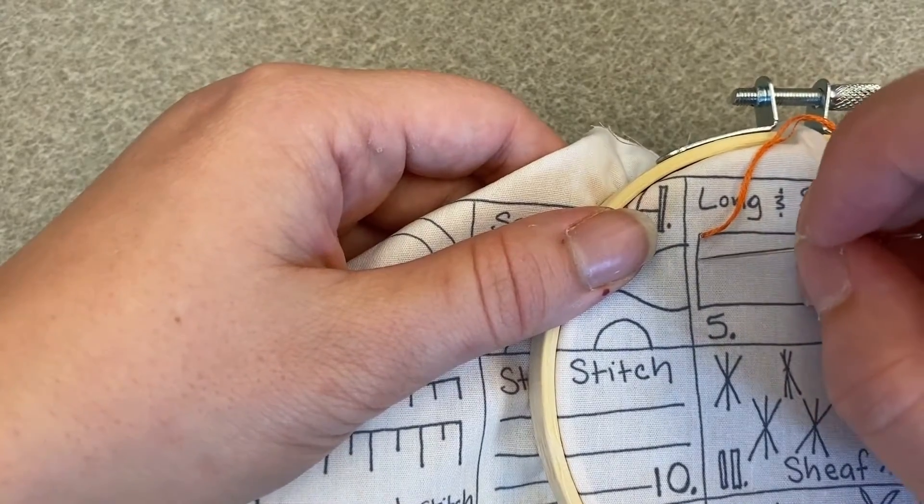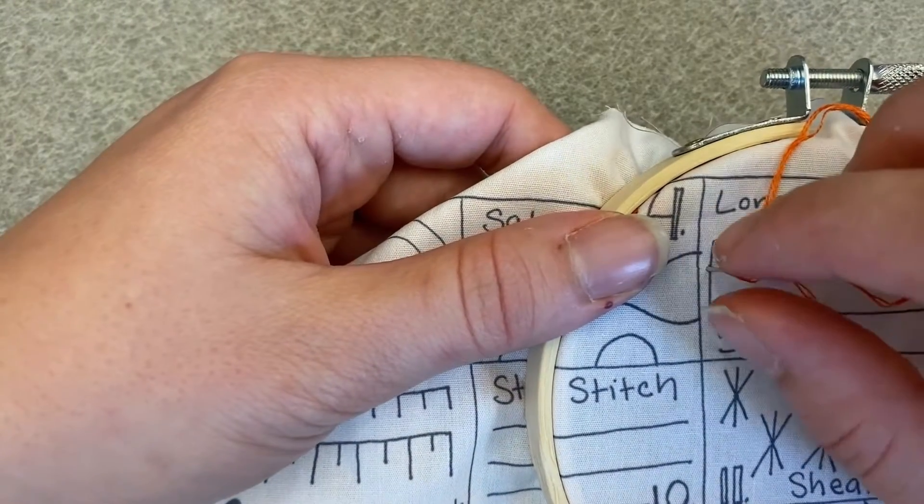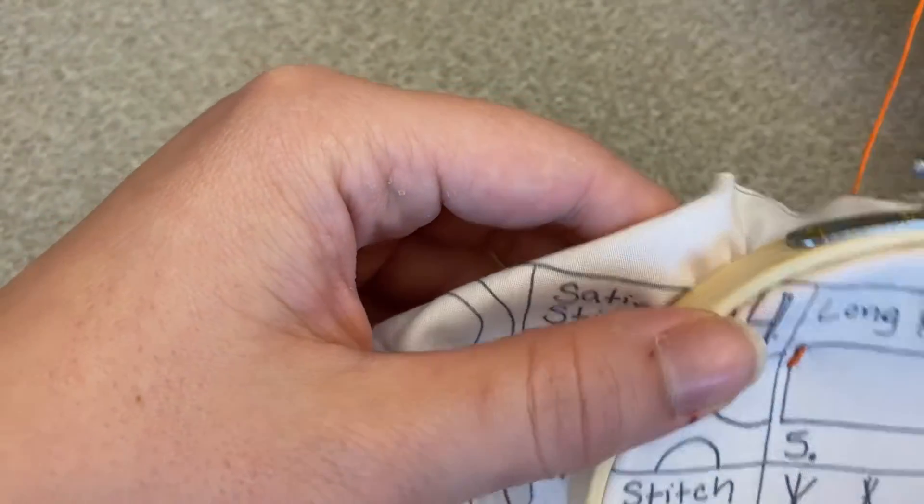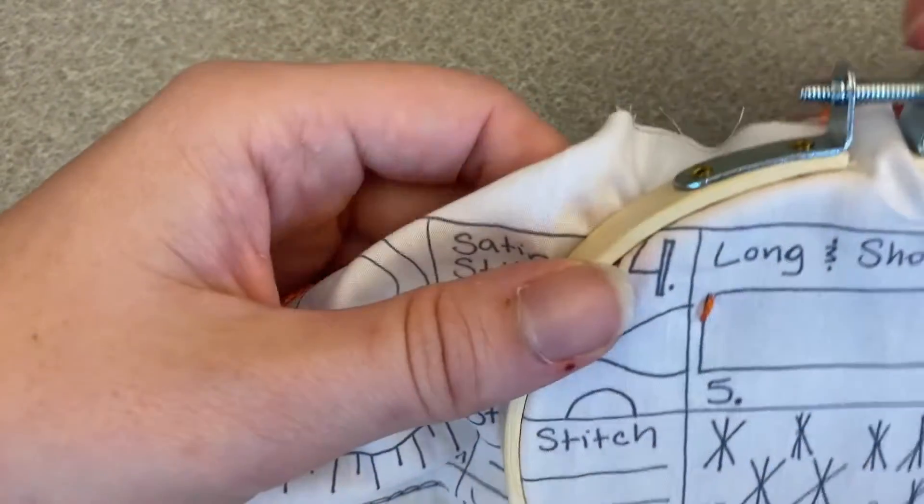For the short and long, you want to start by making a regular stitch, your straight stitch. Okay, like that.